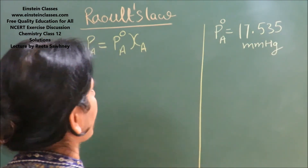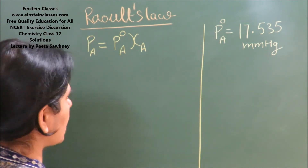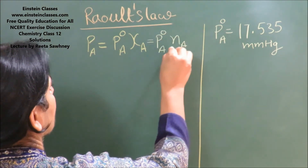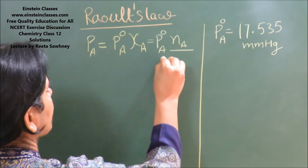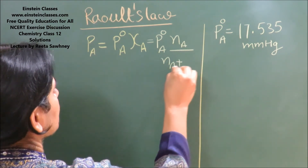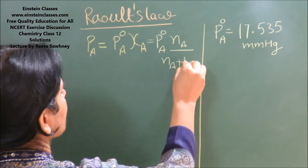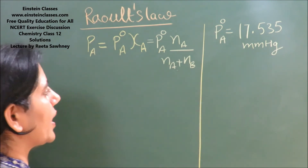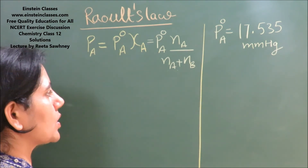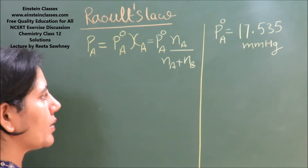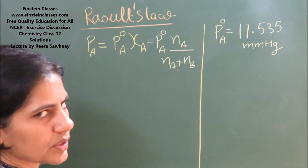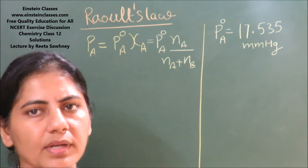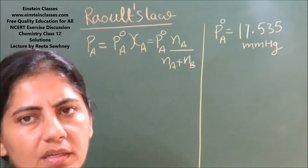So we need to find out the mole fraction of water. The mole fraction of water is moles of A divided by the total moles in solution, that is moles of water plus moles of glucose. We are taking Na to be the moles of solvent, that is water, and Nb to be the moles of glucose.